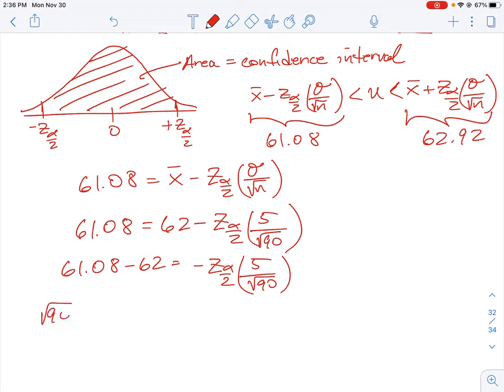Divided by 5 times negative 1, times 61.08 minus 62, and that is going to be equal to our z_α score. All right, so if we take our calculator here and plug that value into there.